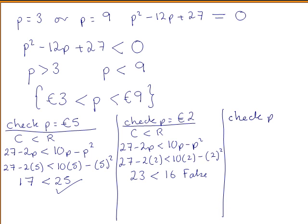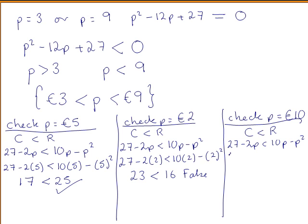Checking a price above 9 euro — we will check 10 euro. Filling in 10 for p, this gives us that 7 is less than 0, which is false. So this proves that we are correct.